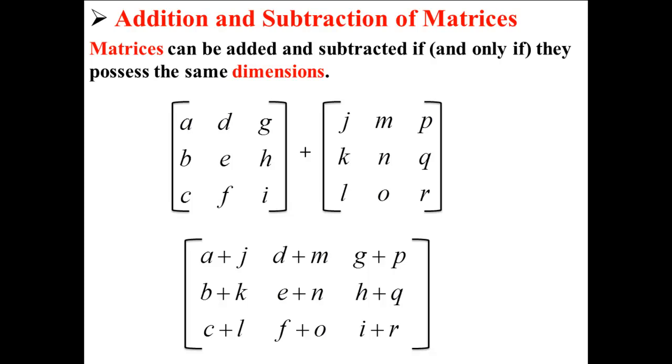For example, here is how we would add matrix A and matrix B. We would simply add together the corresponding elements to create a new matrix.